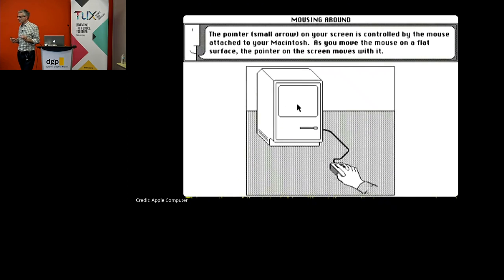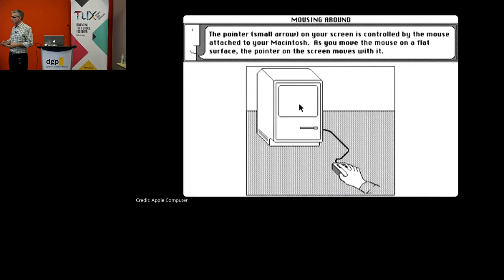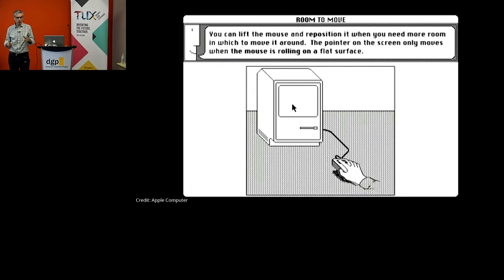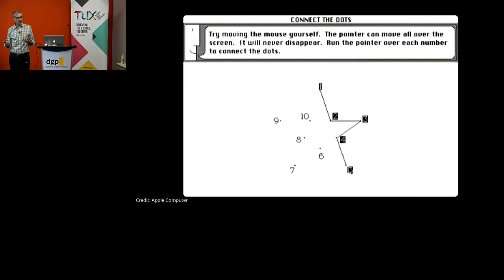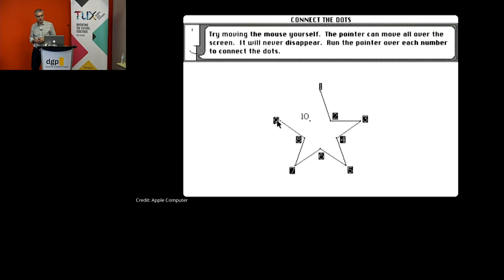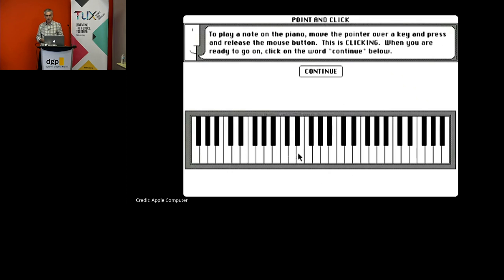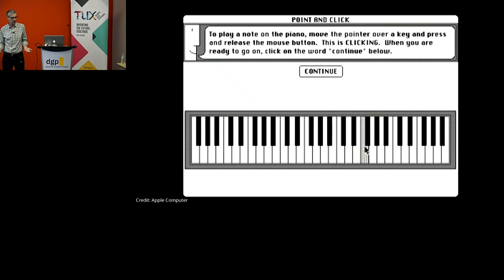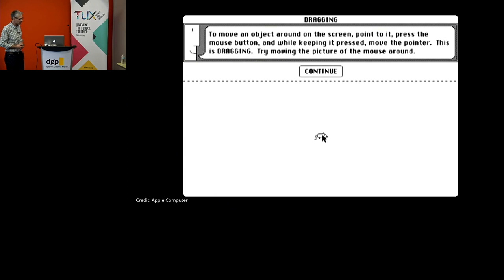When they first introduced the mouse, people didn't know how to use this thing. So they had to have a tutorial. This is the original tutorial to show them how you can point, how you can do this thing called clutching, where you lift up the mouse to reposition it. They also explained what the different types of things you could do with the mouse — just pointing, moving, placing over a target, clicking, dragging, and even double clicking.